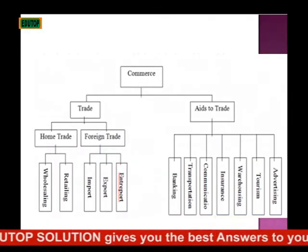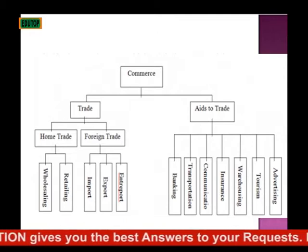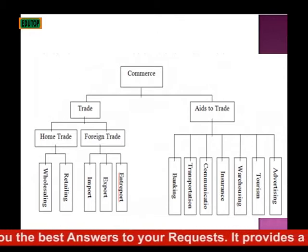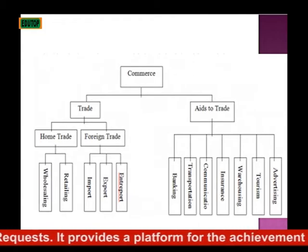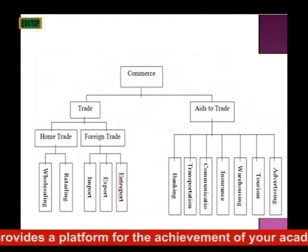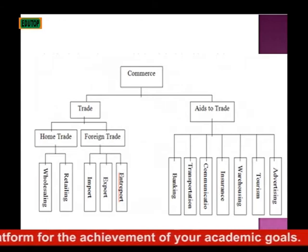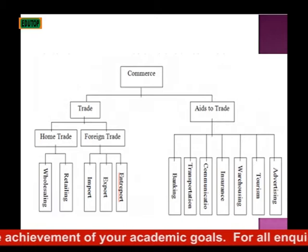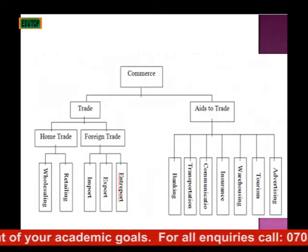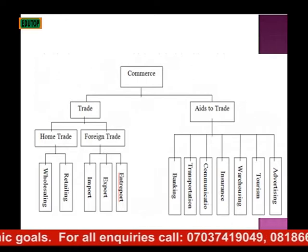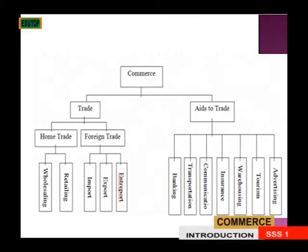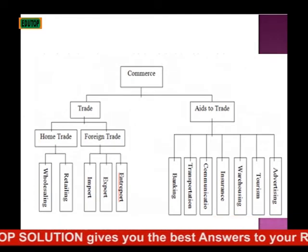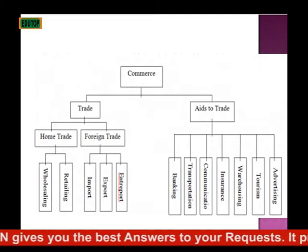A chart showing the major divisions of commerce. Commerce is subdivided into two divisions: trade and aids to trade. Under trade, we have home trade and foreign trade. Under home trade, we have retailing and wholesaling. Under foreign trade, we have imports, exports, and entrepôts. Under aids to trade, we have banking, transportation, communication, insurance, warehousing, tourism, and advertising.